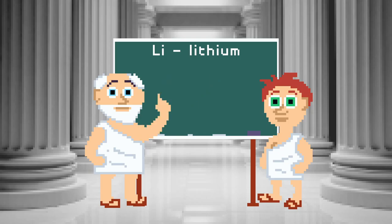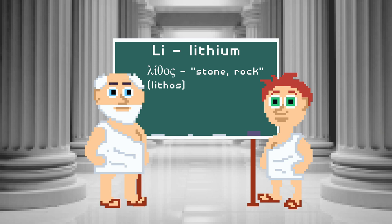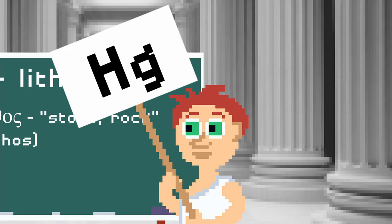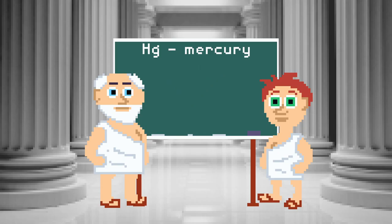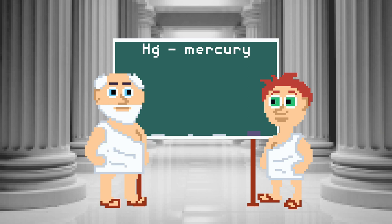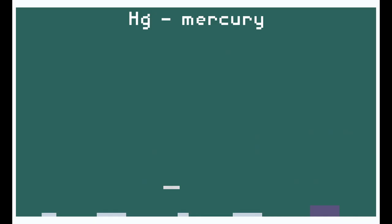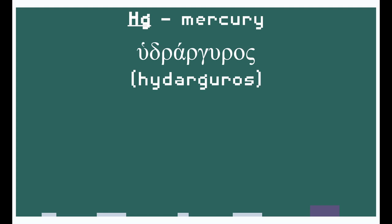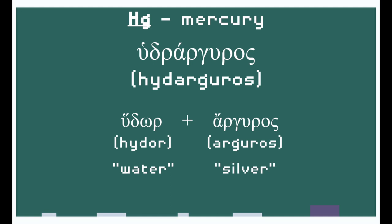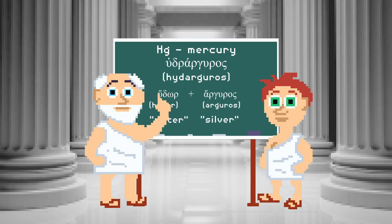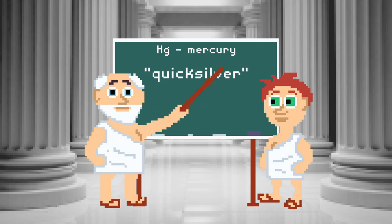Lithium — Greek. Lithos means stone or rock. Lithium was discovered in a solid mineral sample, so it's got rock in its name. Mercury — Greek, the element symbol anyway. Mercury is actually a Roman god, the equivalent of the Greek god Hermes. Mercury has the symbol Hg because of its Greek name, which was a combination of hudor and arguros. This is still reflected in Mercury's colloquial name, Quicksilver.